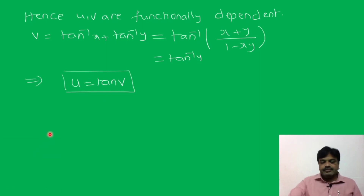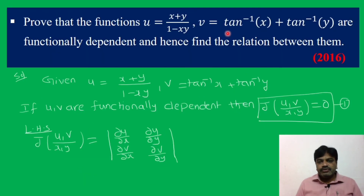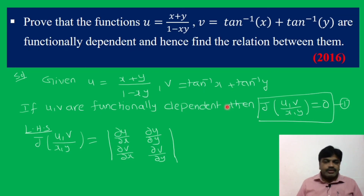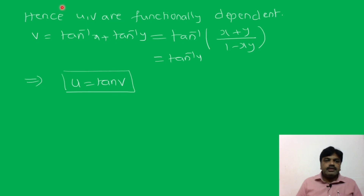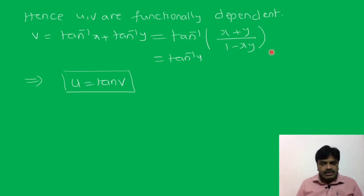Once again, given u and v functions, prove that they are functionally dependent. Functionally dependent means J(u,v)/(x,y) = 0. Take LHS, write the Jacobian definition, find the derivatives, expand the determinant — we get the value 0. Hence u and v are functionally dependent. For the relation: v = tan⁻¹x + tan⁻¹y = tan⁻¹[(x + y)/(1 − xy)] = tan⁻¹(u), so u = tan(v).